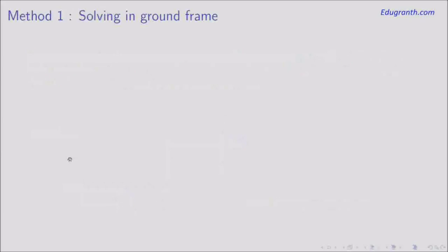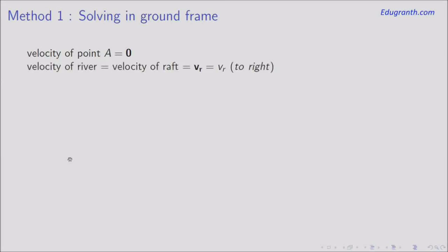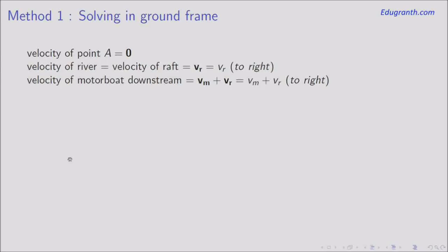We will solve the problem in three ways. In method one we analyze in the ground frame — how the motion appears to an observer on the ground. From the ground frame, point A is fixed with velocity zero. The velocity of the raft equals the river velocity, which we call vector Vr with magnitude Vr moving to the right. The velocity of the motorboat moving downstream is Vm plus Vr, with magnitude Vm plus Vr moving right. When it moves upstream, Vm changes sign to minus Vm, giving net velocity minus (Vm minus Vr), so it moves left with speed Vm minus Vr.